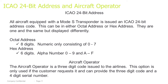ICAO 24-bit address: all aircraft equipped with a Mode S transponder are issued an ICAO 24-bit address code. This can be either an octal address or hex address — they are one and the same, but displayed differently. Octal address: 8 digits, numeric only, consisting of 0–7. Hex address: 6 digits, alphanumeric, 0–9 and A–F.